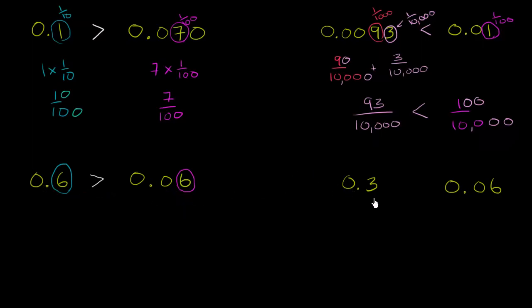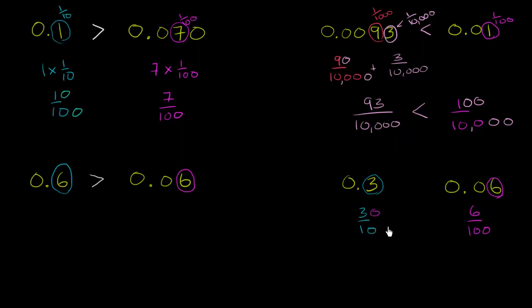Now let's think about 0.3 versus 0.06. This 3 literally represents three tenths, while this 6 represents six hundredths. To compare directly, multiply three tenths by 10 over 10 — that doesn't change its value — and you get 30 over 100. So three tenths equals 30 hundredths, and 30 over 100 is a lot larger than 6 over 100. So 0.3 is greater than 0.06.